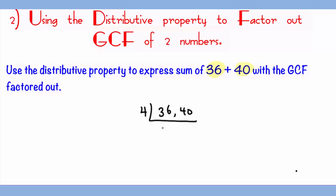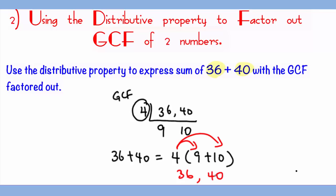This brings 36 down to 9 and 40 down to 10. Given that 9 and 10 are relatively prime, you stop there. This is the GCF. To rewrite 36 plus 40 with the GCF being factored out, you leave 4 outside and 9 plus 10 inside the parentheses. If you check your work, you should see that 4 times 9 will be 36 and 4 times 10 will be 40, which is what you started with.